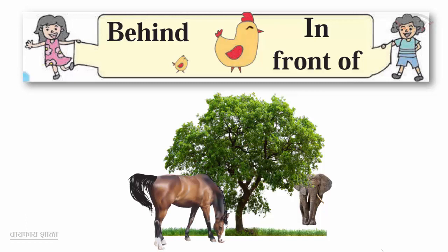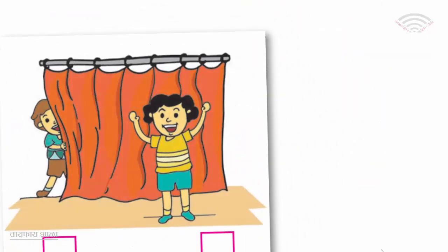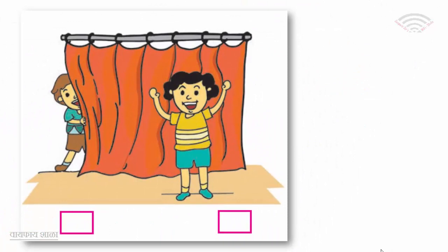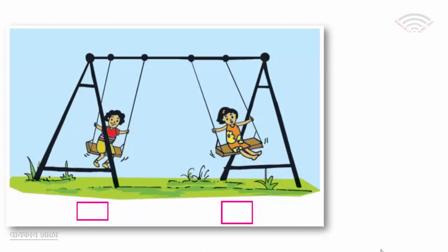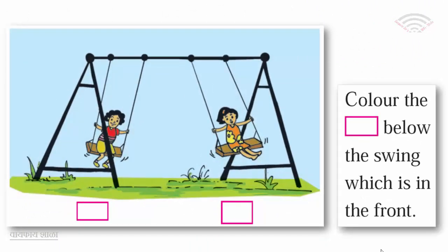Look at the picture and color the box below the child who is behind the curtain. Look at the picture and color the box below the swing which is in the front.